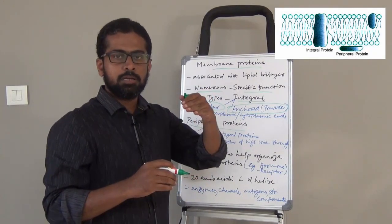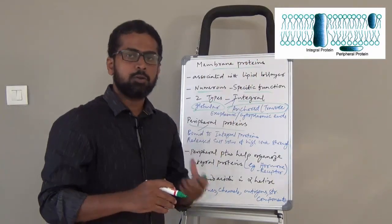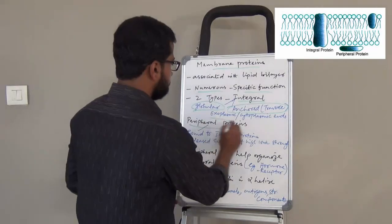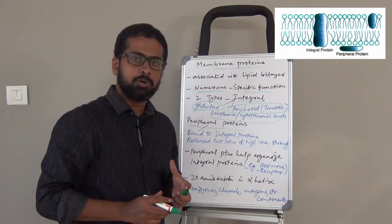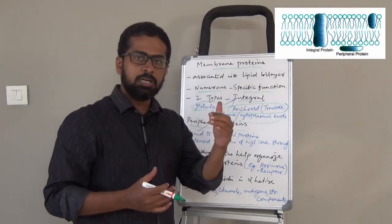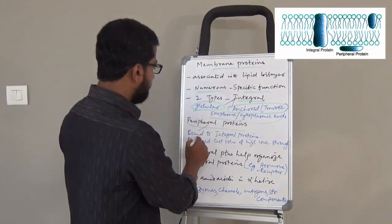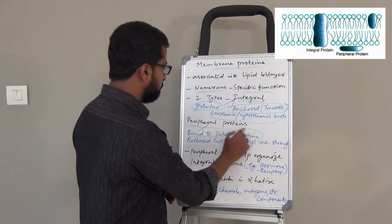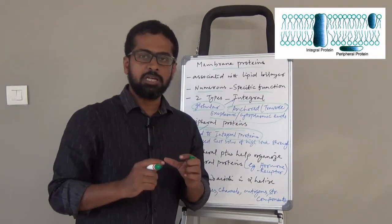They traverse the bilayer with one end in the exoplasmic side and one end in the cytoplasmic side. Coming to peripheral proteins, they do not directly interact with the lipid bilayer. They only interact with integral proteins and bind to them weakly.